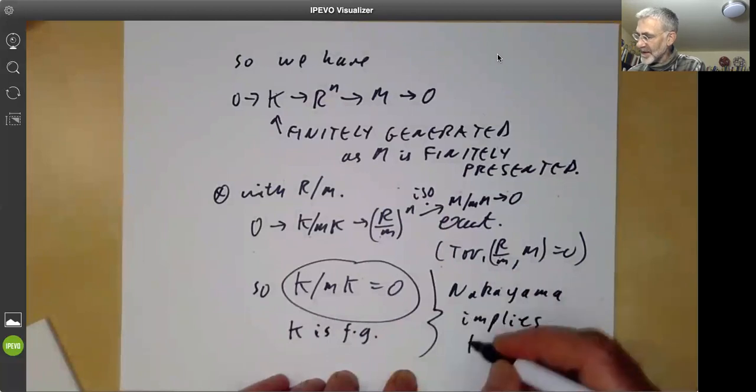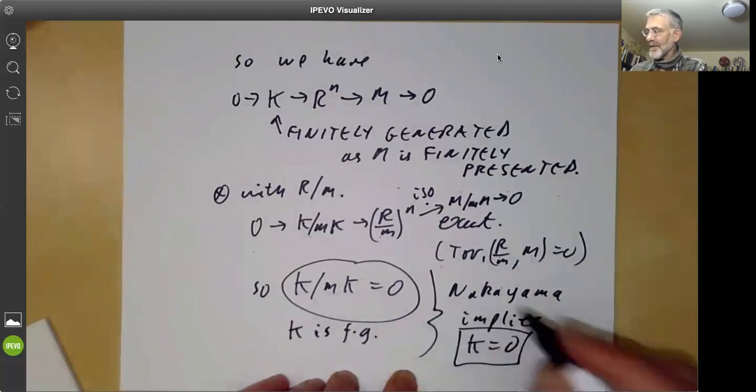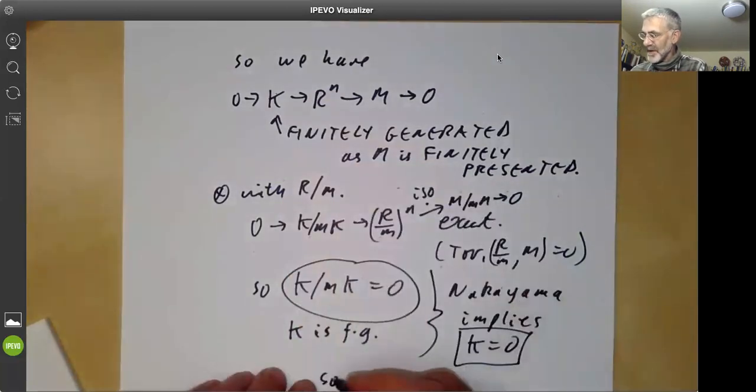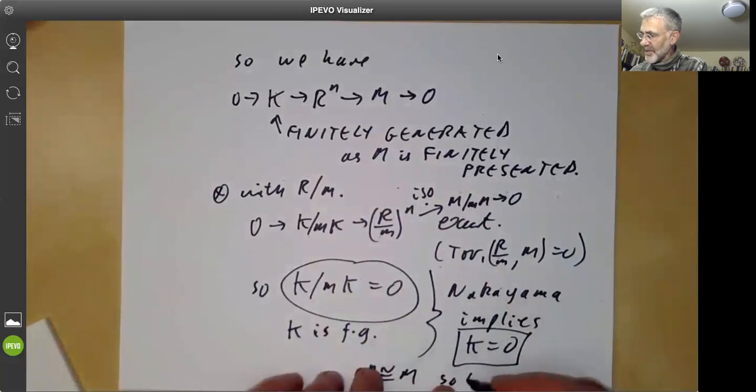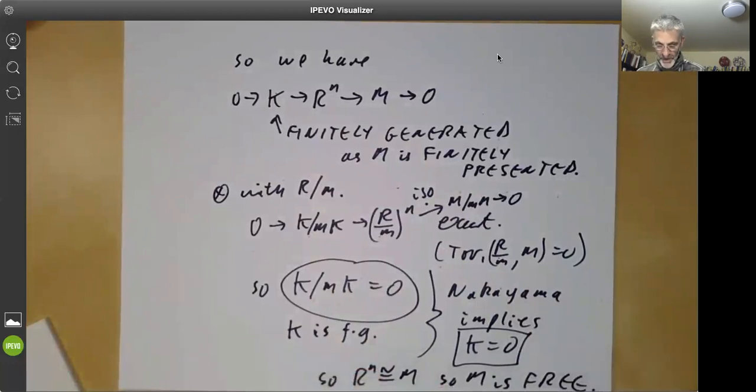So this implies that K is equal to zero. And if K is equal to zero, this means that R to the N is isomorphism to M. So M is free, which is what we wanted to prove.